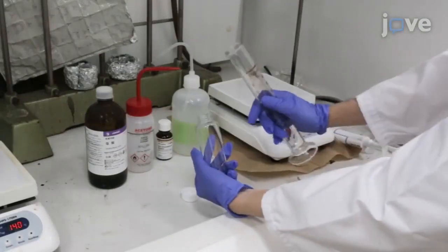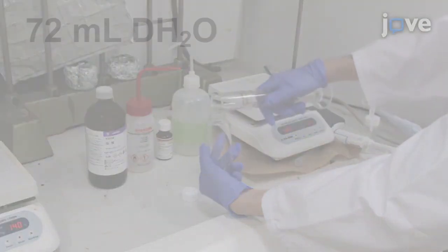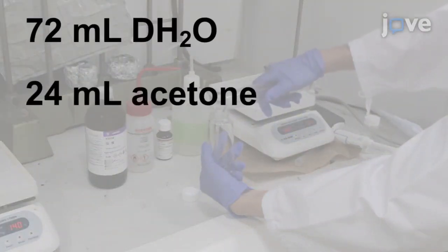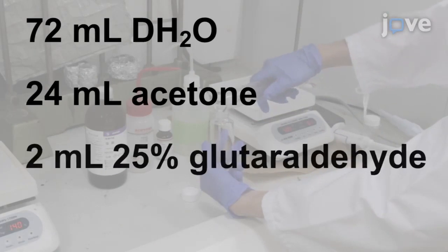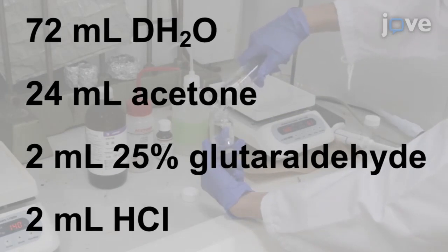To prepare the cross-linking reagent, add 72 mL of distilled water, 24 mL of acetone, 2 mL of 25% glutaraldehyde solution, and 2 mL of hydrochloric acid to a 100 mL vial.